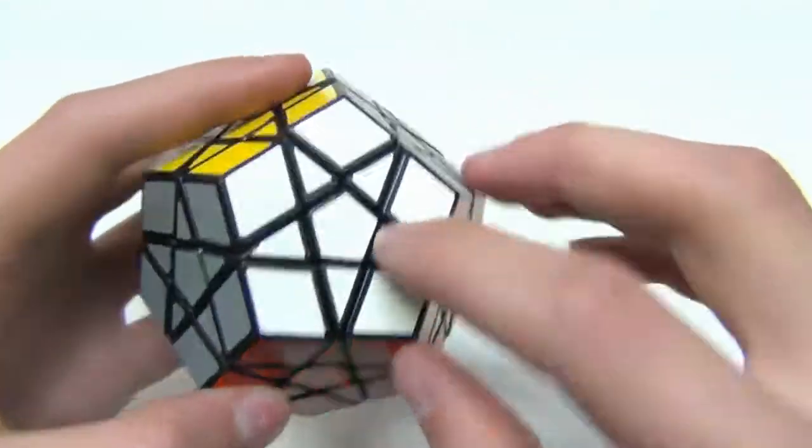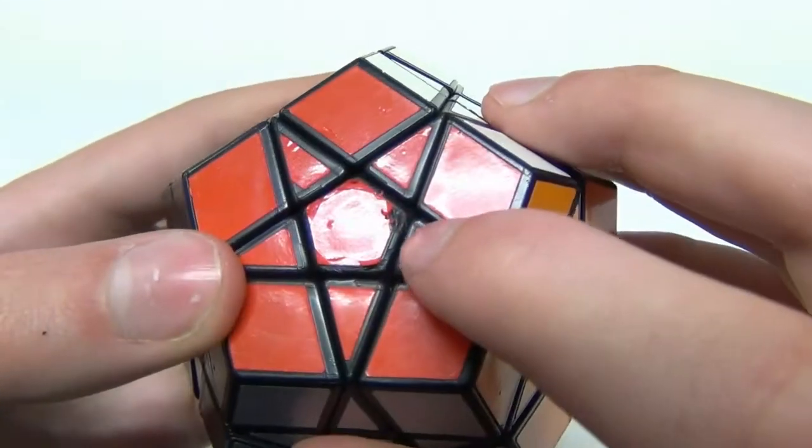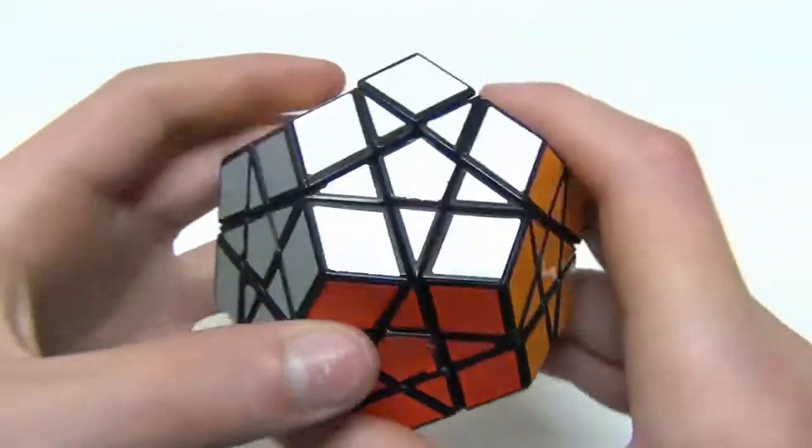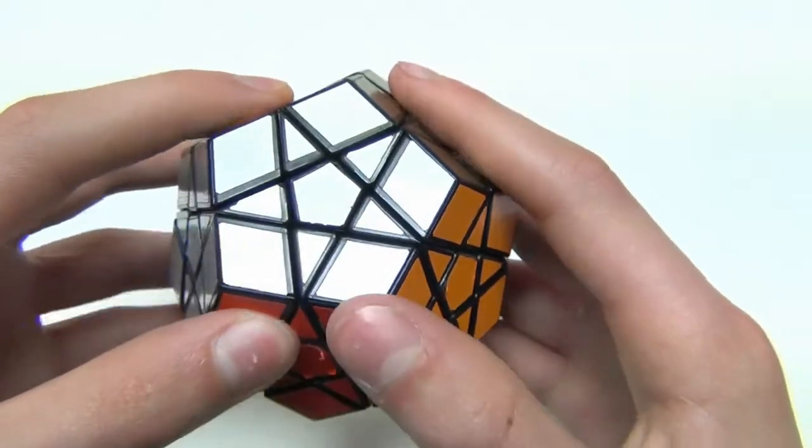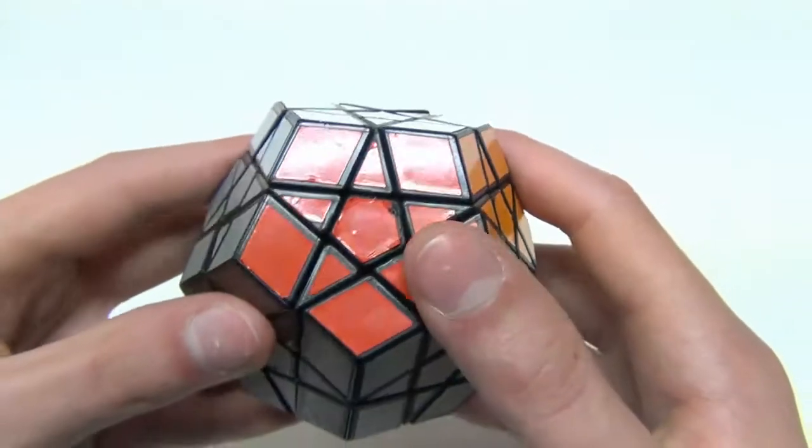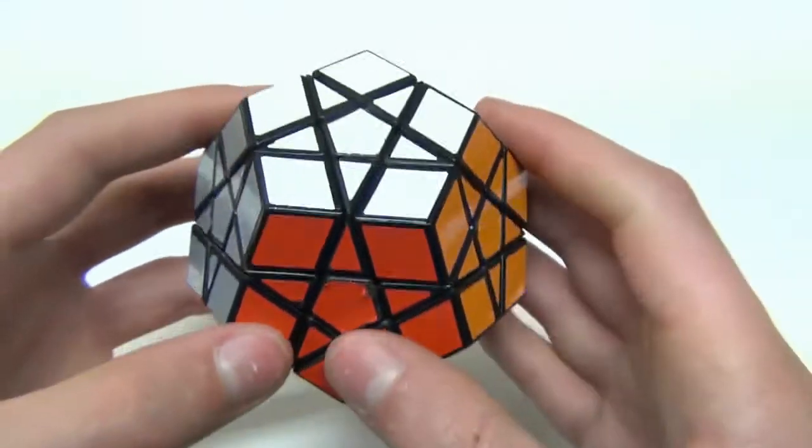And then what I actually had to do is I took an X-Acto knife and pried off the caps because they're actually hidden underneath the stickers. And I was actually able to adjust the tensions of this puzzle with a flathead screwdriver because the screws were actually flathead.